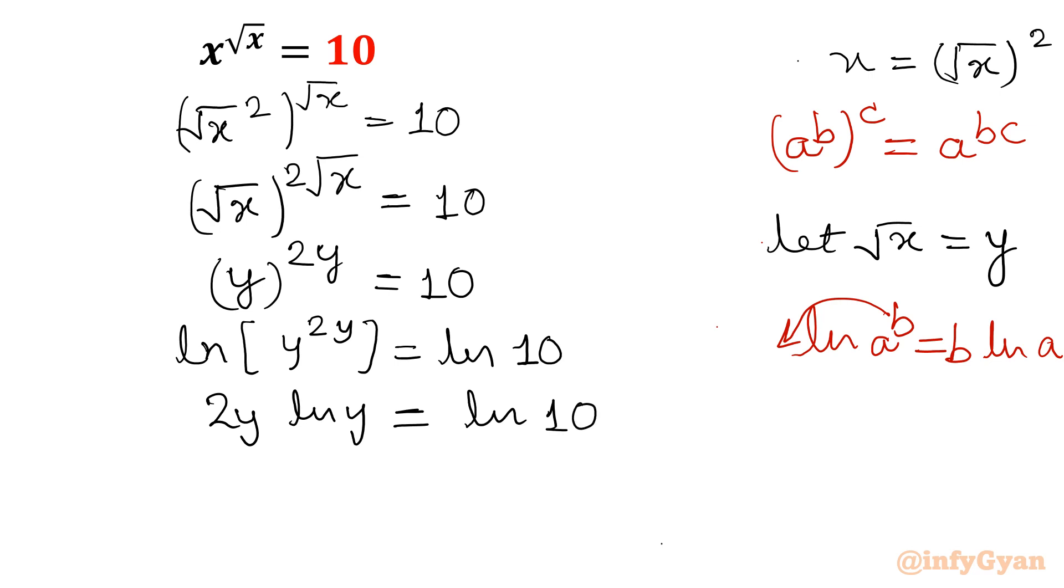Now if you will observe, y ln y is there. So we can write y as exponent form. How we can write y as exponent form? I will write y as e raised to the power ln y. Once I will write e raised to the power ln y times ln y, and that 2 I will take in the denominator of right side.